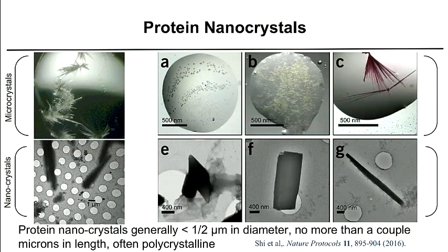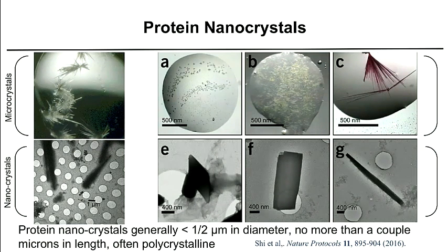Micro-ED requires protein nanocrystals, which are initially grown and optimized as micro crystals in 24-well hanging drop experiments. In the top left you see needles grown from a human prion peptide, and panels A, B, and C show different morphologies of micro crystals — rhomboid shaped, brick shaped, and needles. To better visualize nanocrystals, we image them using transmission electron microscopy, overlaid on a holey carbon grid, with each hole approximately one micron wide. In E, F, and G you can clearly see rhomboids, bricks, and a needle.